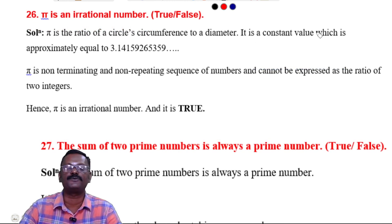Next question, 26th question: Pi is an irrational number, true or false? Pi is the ratio of the circle's circumference to its diameter. It is a constant value which is approximately equal to 3.14159265359. Pi is non-terminating and non-repeating sequence of numbers and cannot be expressed as the ratio of two integers. Hence, pi is an irrational number.